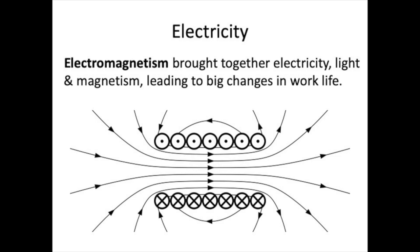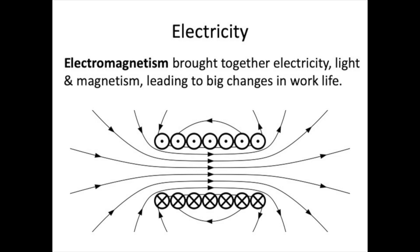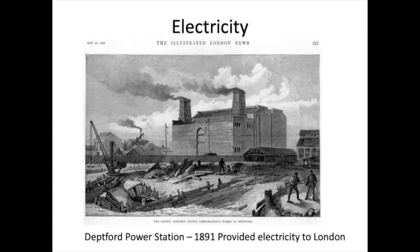It brought electricity together with light and magnetism, making electric lighting possible in cities and in factories. The work day, as well as leisure activities, could be greatly extended. The electric-powered assembly line contributed even further to changes in work life and to the growth of factories to generate the supply of electricity to major cities.